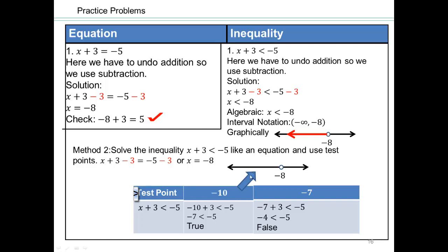In fact, look, if you take any number that is smaller than negative 8, negative 9, negative 15, negative 8 and 1 half plus 3 is going to be a number smaller than negative 5. So every number below negative 8 is going to make this statement a true statement. And so all of that is your solution.